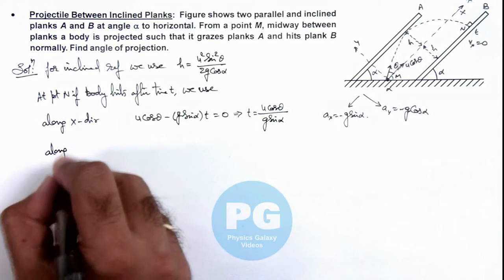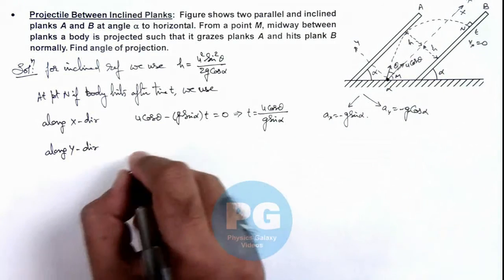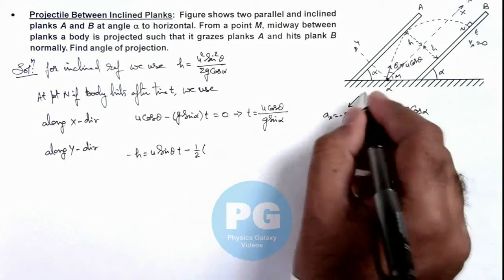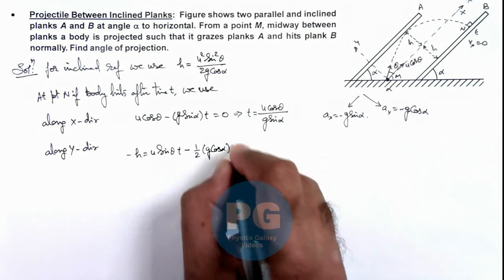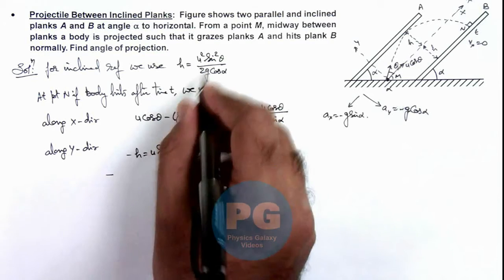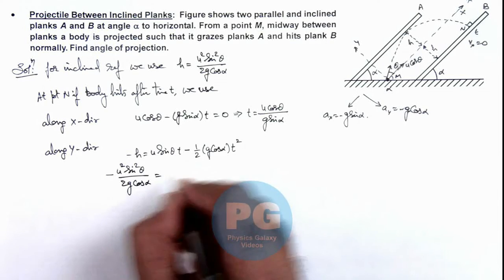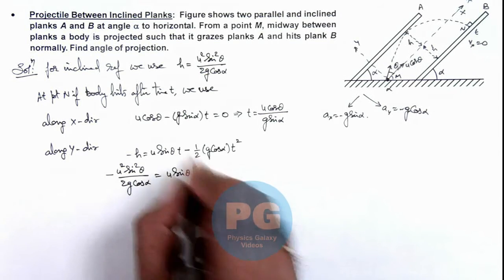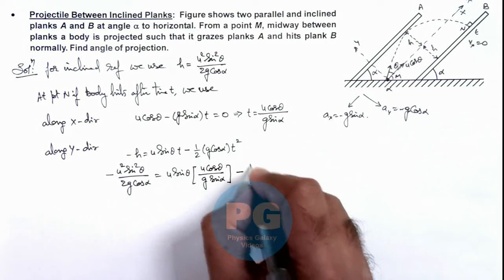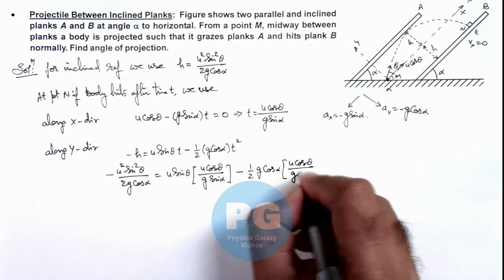Along the y-direction, with respect to the projection point, the body is at a coordinate of minus h. So we can write: minus h equals u·sin(θ)·t minus half times g·cos(α) times t². Substituting h as u²·sin²θ divided by 2g·cos(α), and time t as u·cos(θ) divided by g·sin(α), we get the full displacement equation.